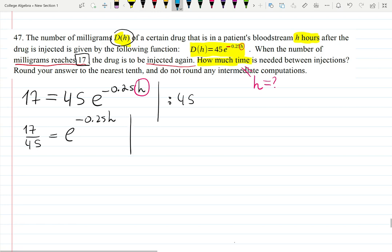Step one: I will divide by 45 to isolate the exponential function. 17 over 45 equals e to the minus 0.25h. Step two: I will apply natural log to both sides. I will have, step one, let's do one, two, now like this, original, step one, step two.